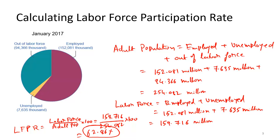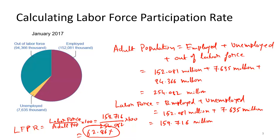Let's look at some historical trends in labor force participation rate, especially based on gender. Starting from the late 1940s through 2010, we can see men's and women's labor force participation rates. The red line represents men and the other line represents women. Women's labor force participation rate has increased steadily since World War II. At the same time, men's labor force participation rate has declined.